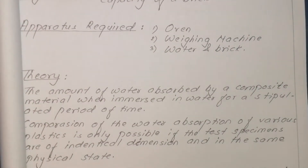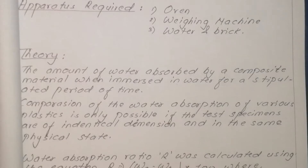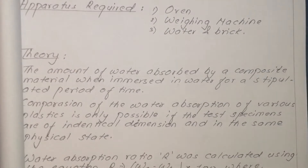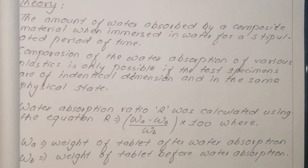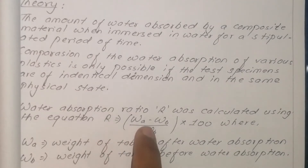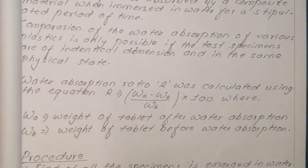The amount of water absorbed by a composite material when immersed in water is measured. The water absorption ratio R is calculated using the equation: R equals (W_A minus W_B) divided by W_B, multiplied by 100. W_A is the weight of the brick after water absorption.